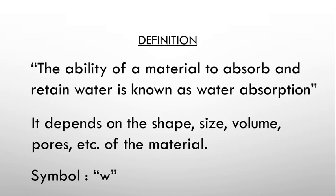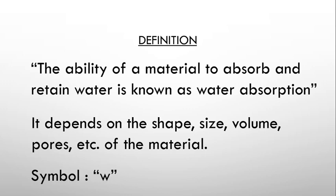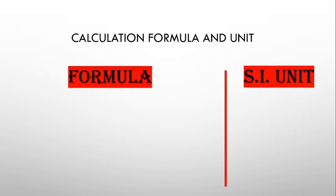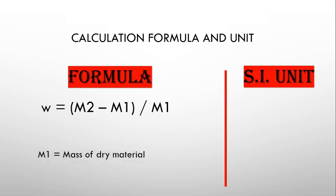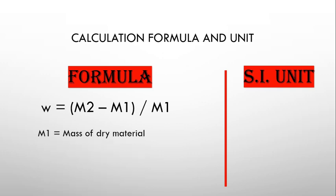Water absorption is symbolically represented by the symbol small 'w'. The formula to find water absorption is (m2 − m1) / m1, where m1 is the mass of the dry material — that is, the mass of the material before absorption of water, in a completely dry state.